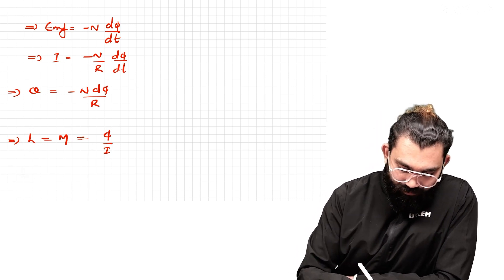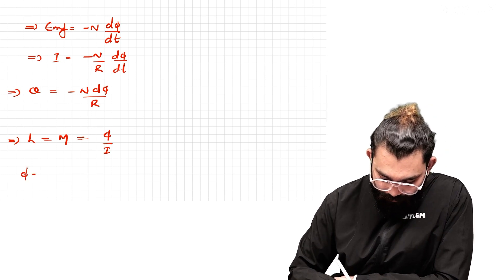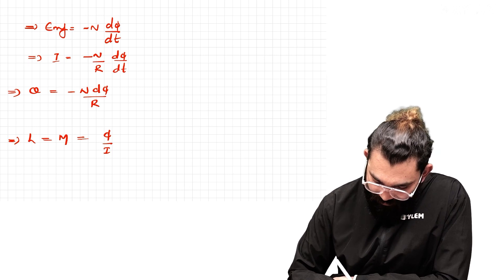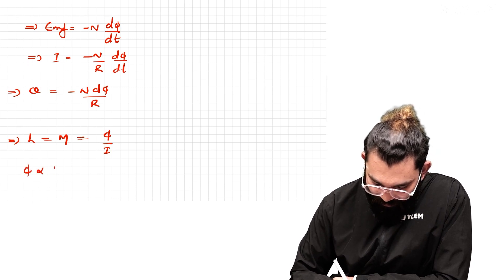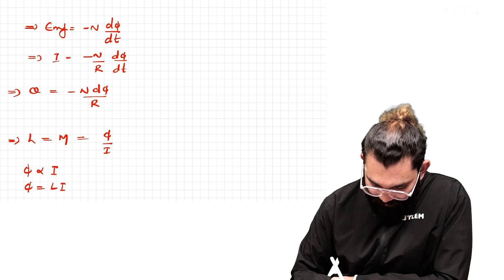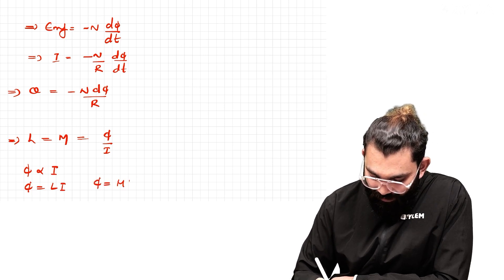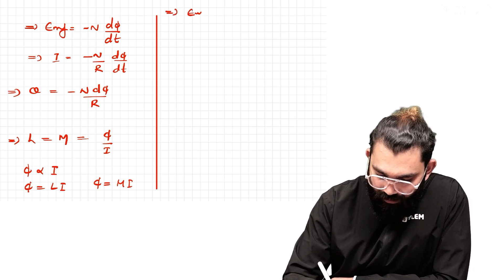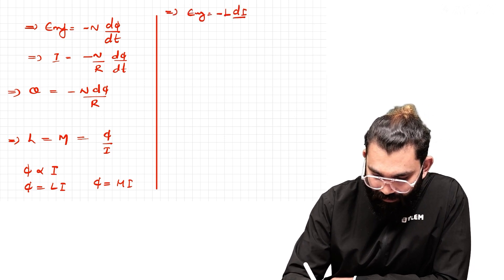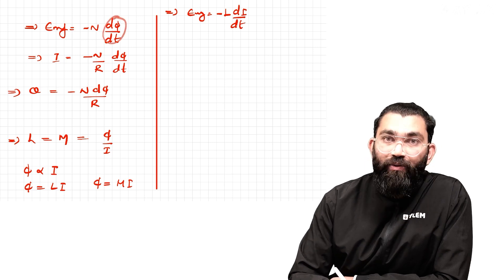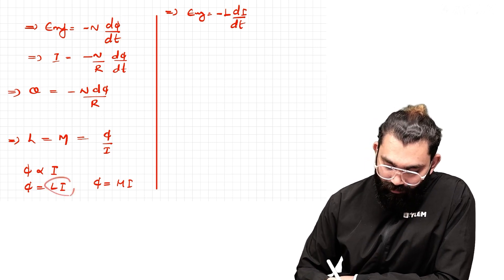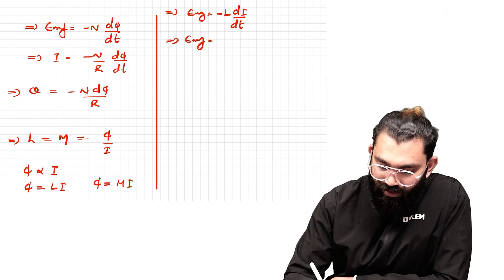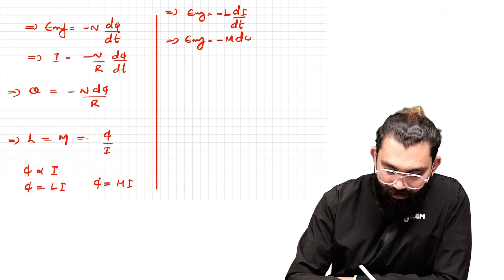We have to learn the equation. Flux is proportional to current, so flux is equal to L into I. For mutual inductance, the flux term is M into I. Then induced EMF is equal to minus of L into dI by dt. And induced EMF is equal to minus of M into dI by dt.